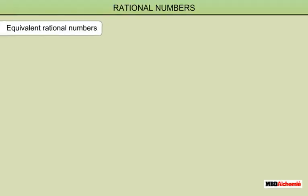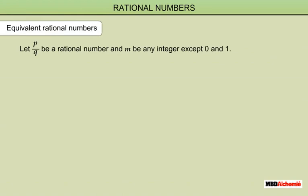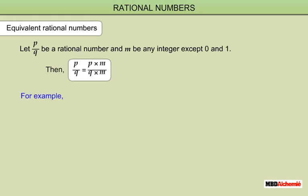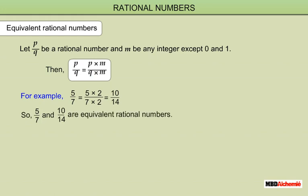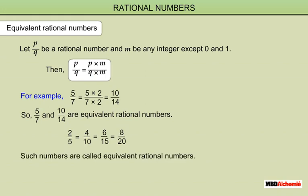Equivalent Rational Numbers: let p upon q be a rational number and m be any integer except 0 and 1. Then p upon q is equal to p times m upon q times m. For example, 5 upon 7 is the same as 5 times 2 upon 7 times 2, that is 10 upon 14. So 5 upon 7 and 10 upon 14 are equivalent rational numbers. Similarly, 2 upon 5 is equal to 4 upon 10, is equal to 6 upon 15, is equal to 8 upon 20. Such numbers are called equivalent rational numbers.